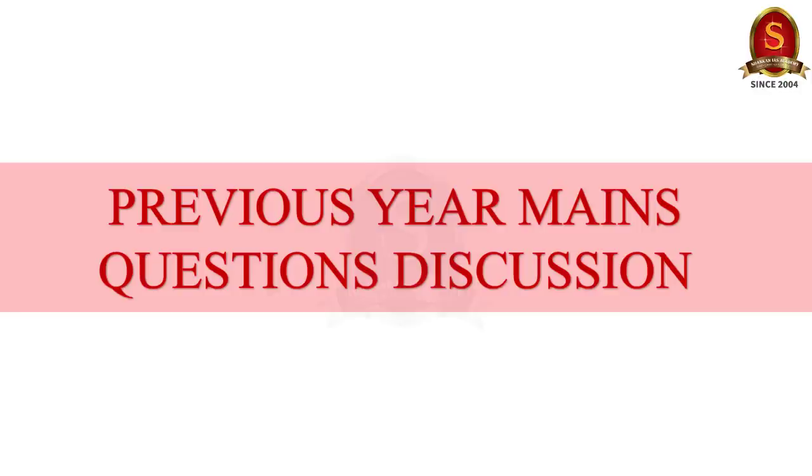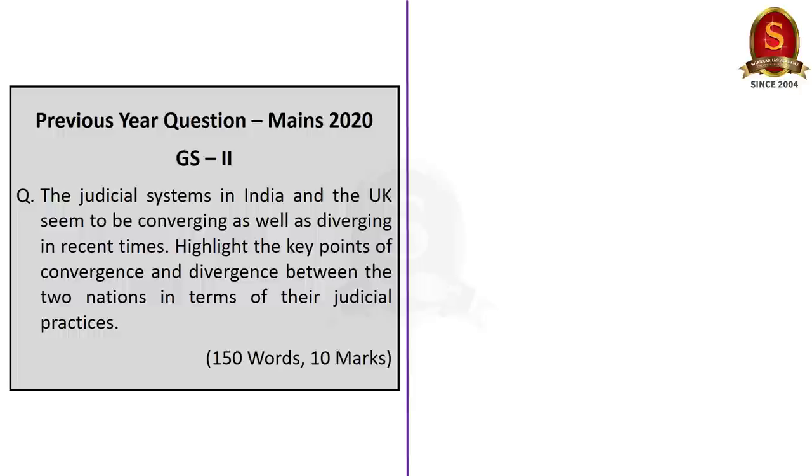Today we will start off with this mains question discussion. Look at this question. It was asked in 2020 mains examination. The judicial systems in India and the UK seem to be converging as well as diverging in recent times. Highlight the key point of convergence and divergence between the two nations in terms of their judicial practices. You have to answer in 150 words.